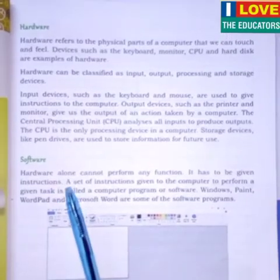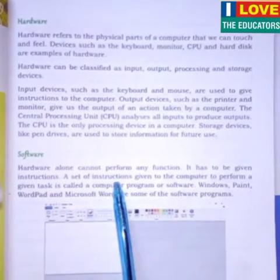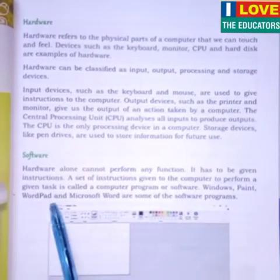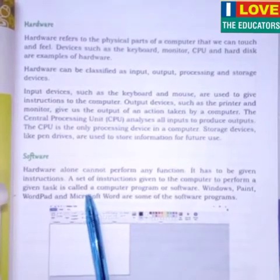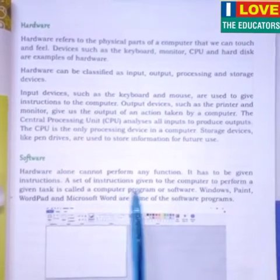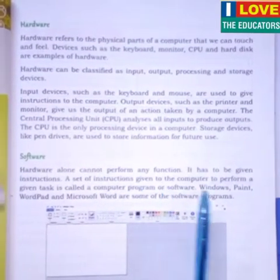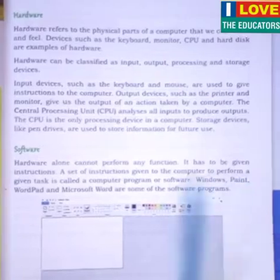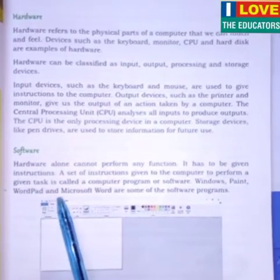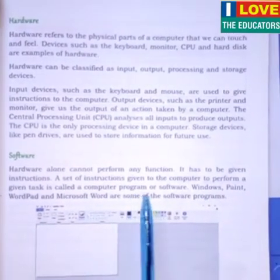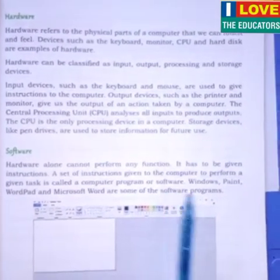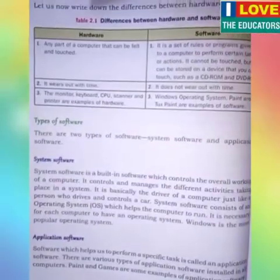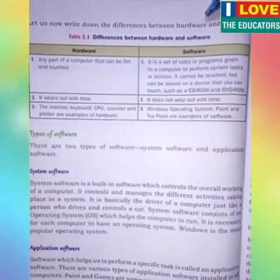A set of instructions given to the computer to perform a given task is called a computer program or software. Windows, Paint, Notepad, and Microsoft Word are some of the software programs. Let us now write down the differences between hardware and software.